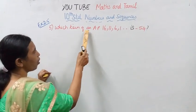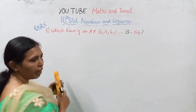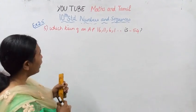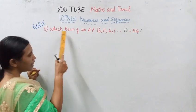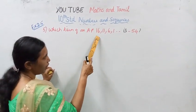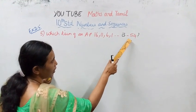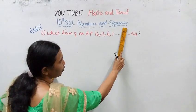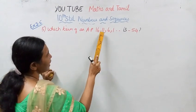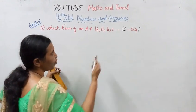Which term of an AP 16, 11, 6, 1 is minus 54? Which term of an AP 16, 11, 6, 1 is minus 54?